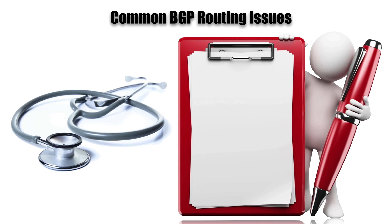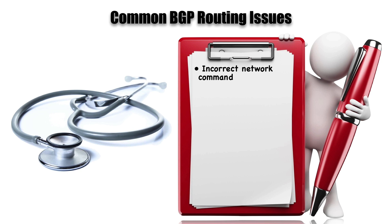Let's now consider some common BGP routing issues. Some of these are similar to those we had with OSPF and EIGRP. For example, we might have an incorrect network statement. Let's double check to make sure we've entered the network statement correctly and haven't transposed a couple of numbers in the IP address.